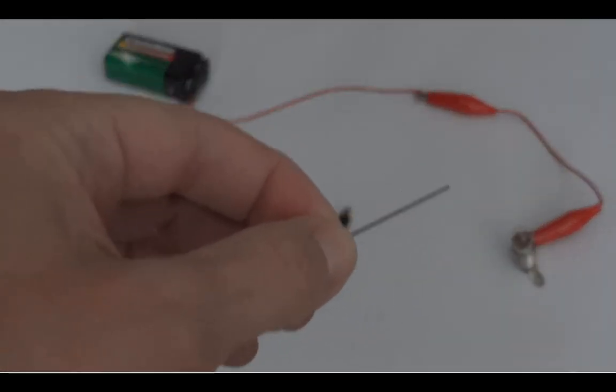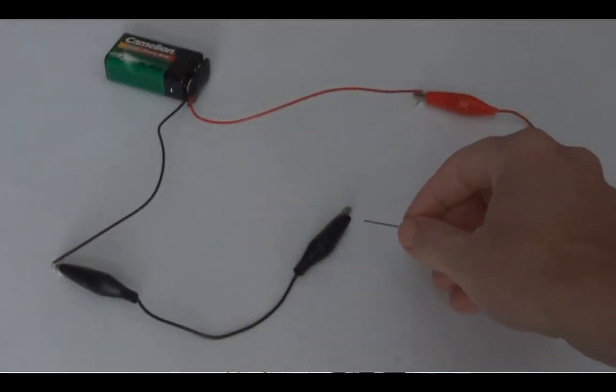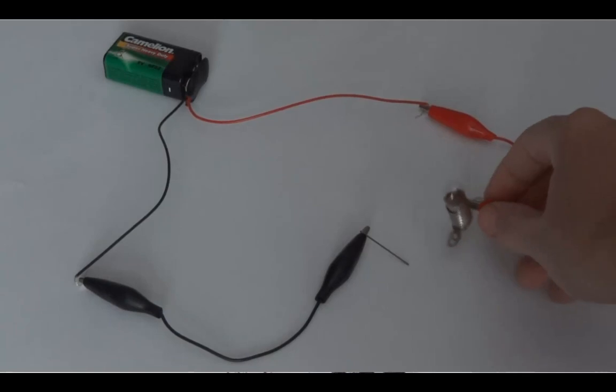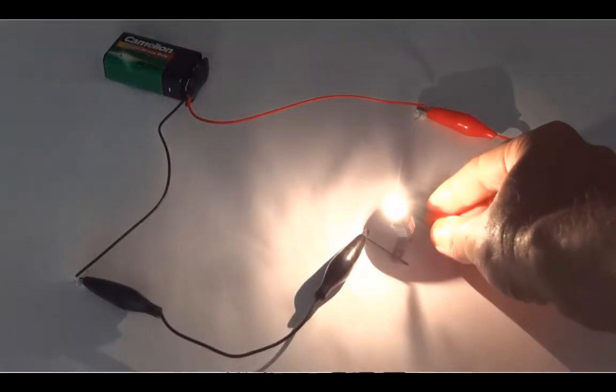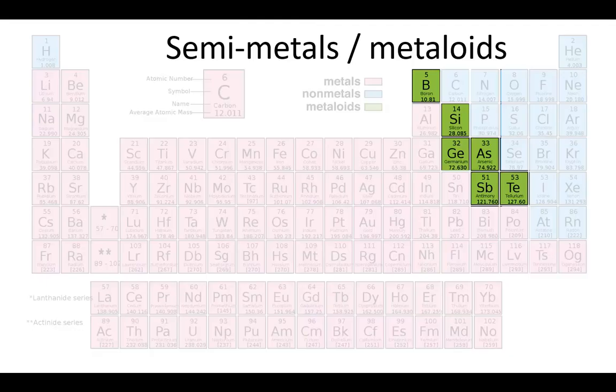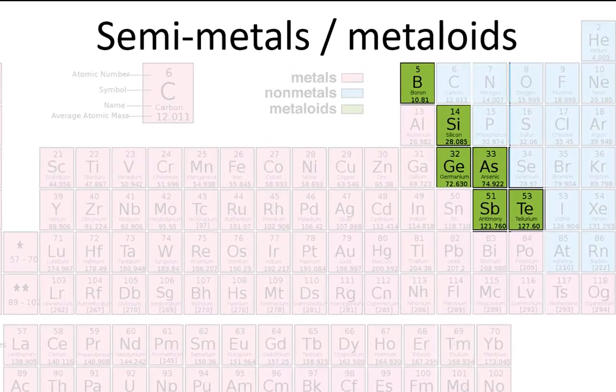But you must always remember there are exceptions. Graphite, the black form of carbon, is a good conductor of electricity. It's a resistor actually, but still, it's not an insulator. The symbol of carbon is C, and sulfur is S.